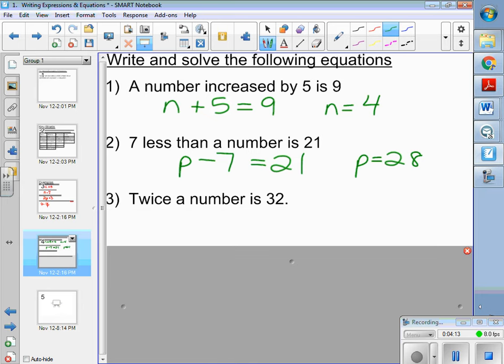Twice a number is 32. Let's change colors just for fun. Twice a number is 32. Well, what number times two is 32? N is 16.